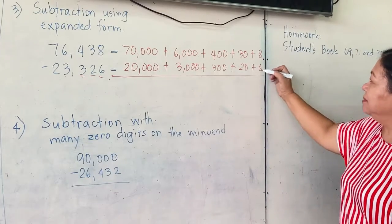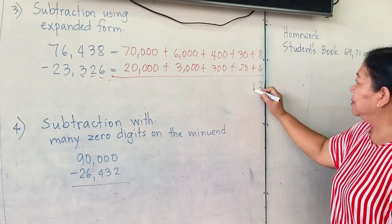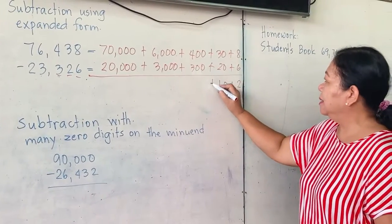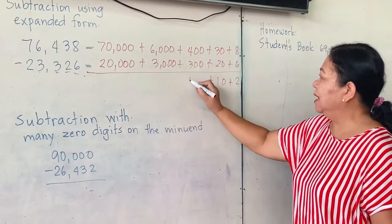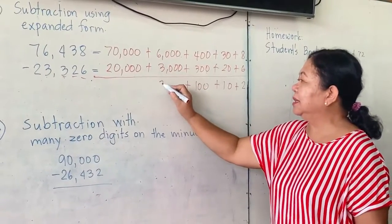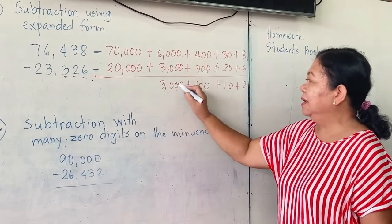8 minus 6 is 2. 0 minus 0 is 0. 3 minus 2 is 1. 400 minus 300 is 100. 6,000 minus 3,000 is 3,000.